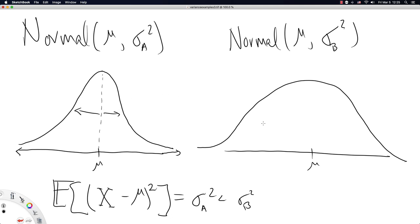So wider here would tell us on average data from this distribution will be further from its mean than data will be from this distribution. One more time, on average, because this distribution has a bigger variance, on average data will be further from the mean for this distribution than it will be for this distribution. And that's how we're supposed to understand this formula for the variance of a distribution.